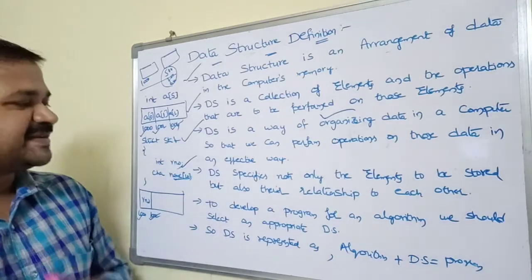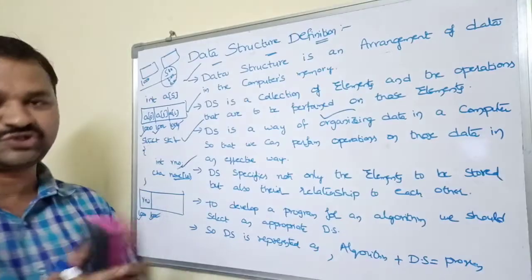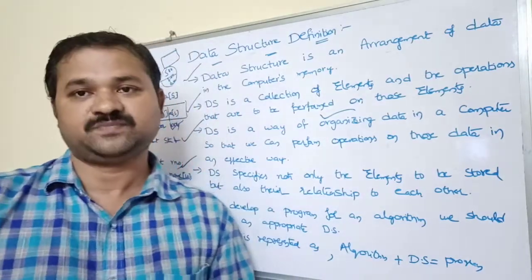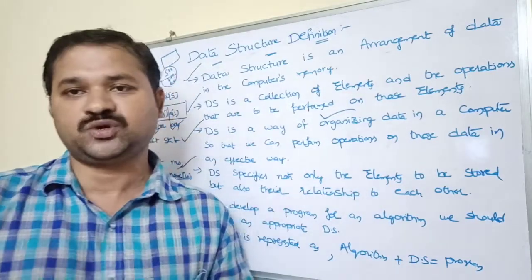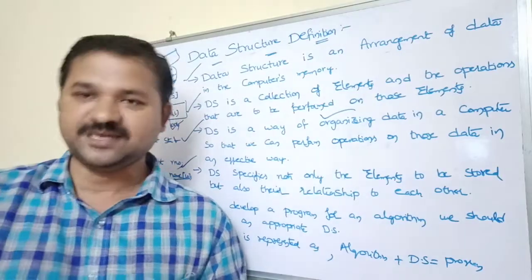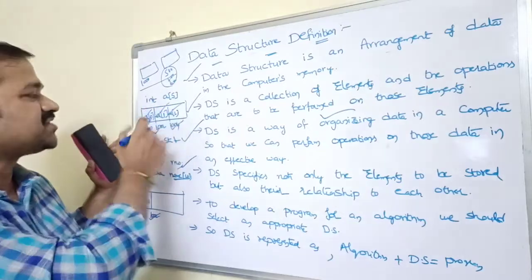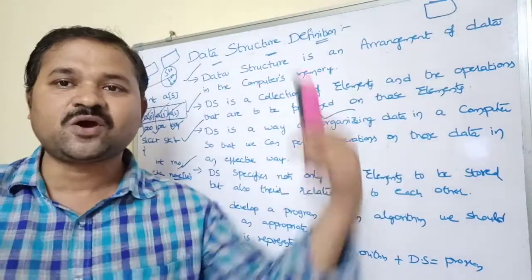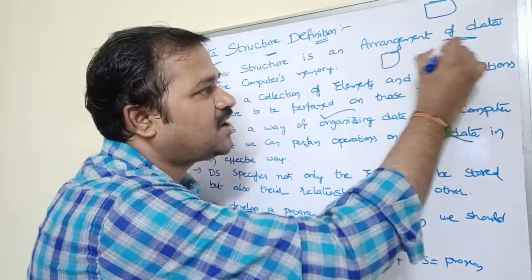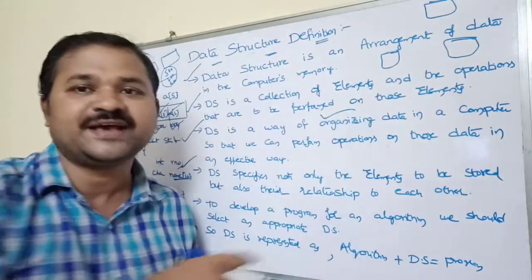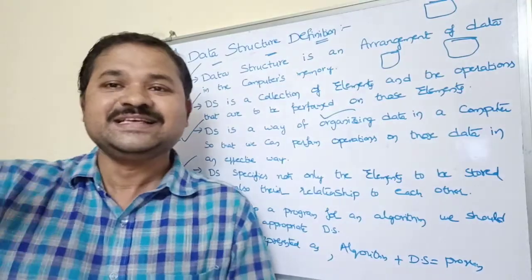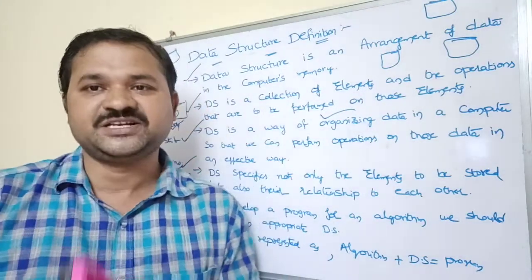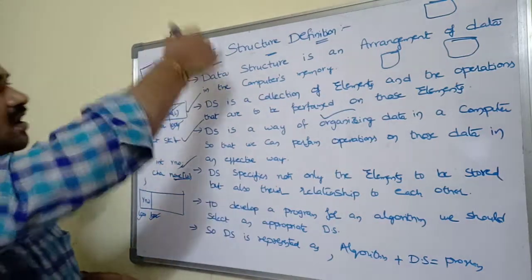The fourth definition: a data structure specifies not only the elements to be stored but also the relationship between those elements. For example, in an array, elements are adjacent. In a tree, the first node is the root node (grandparent), its children are parent nodes, and their children are child nodes — so there is a defined relationship among all nodes in a tree.